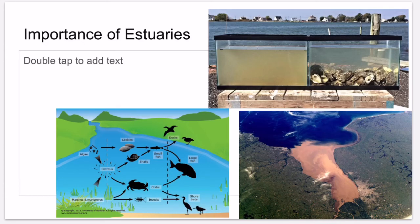Estuaries are important first and foremost because they are a habitat for animals and plants. More than 150 species of fish and invertebrates live in North Carolina estuaries. Some species use different habitats within the estuary system during different stages of their life cycle. Underwater plants cover about 200,000 acres on the coast of North Carolina, and many of these submerged plants produce oxygen and nutrients used by animal species.